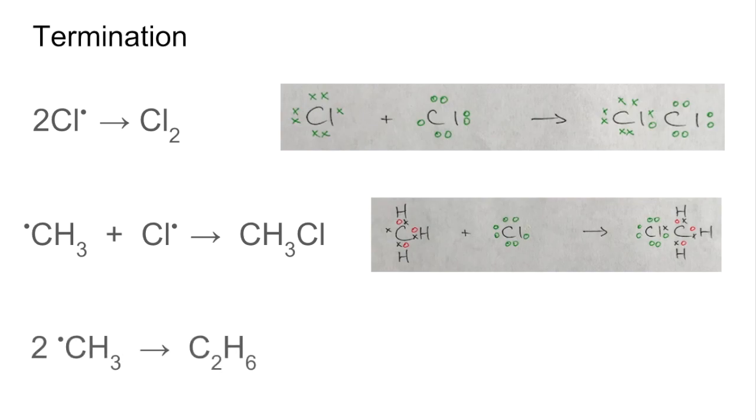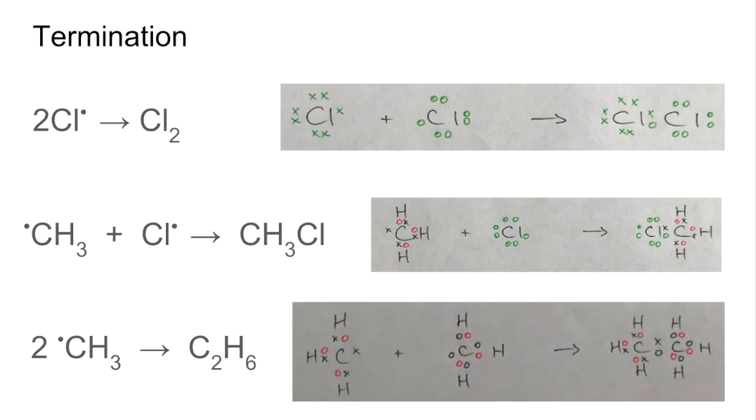And also we could have two methyl radicals combining to form an ethane molecule. The dot and cross diagram would look like that.